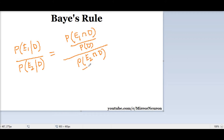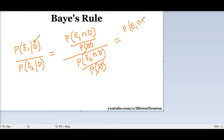This is exactly the conditional probability we saw in our previous video. Because right now we are considering this sample space — we are not looking into the entire sample space where E1 and E2 lie, rather we are looking into the sample space where D has already occurred, which is the conditional probability statement. So this reduces to: you can cancel these two P(D) terms, and this becomes P of E1 intersection D divided by P of E2 intersection D.